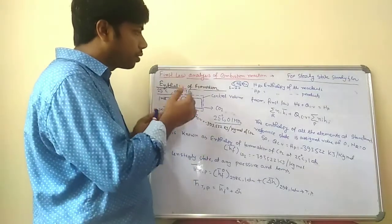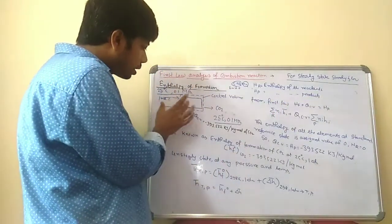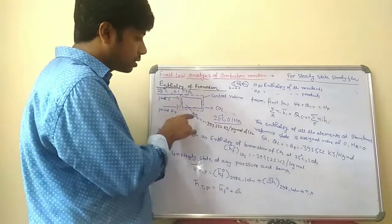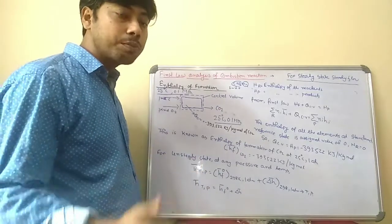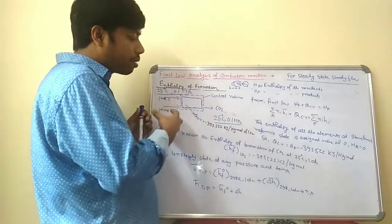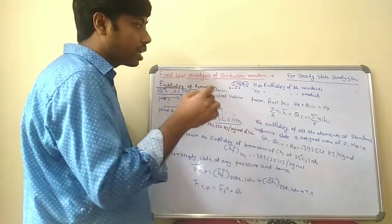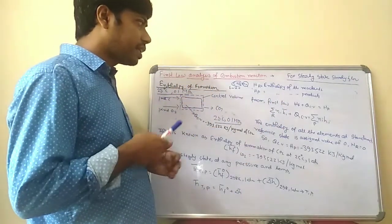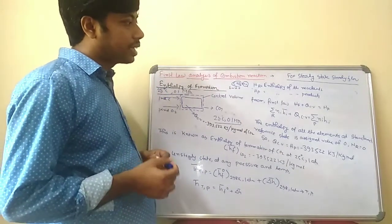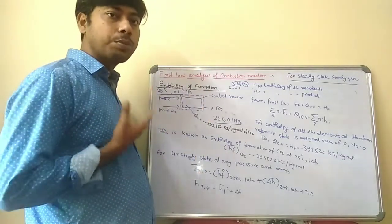Applying the first law of thermodynamics, we can write: HR + QCV = HP. When carbon and oxygen react in the combustion chamber, the amount of heat transfer QCV that occurs is −393 kJ per kg-mole of carbon dioxide. So C + O2 (reactant) has enthalpy HR, and during the reaction the heat transfer QCV takes place: HR + QCV = HP, where HP is the enthalpy of the product CO2. This can also be written as: summation of ni·hi (reactant) + QCV = summation of ni·hi (product), where ni is the number of moles and hi is the corresponding enthalpy.